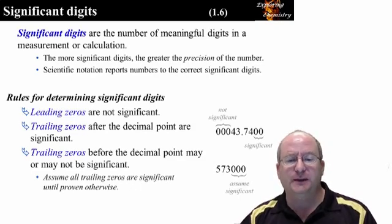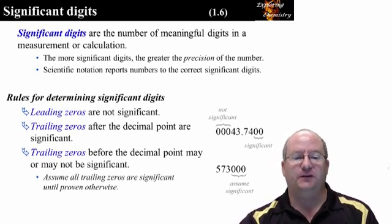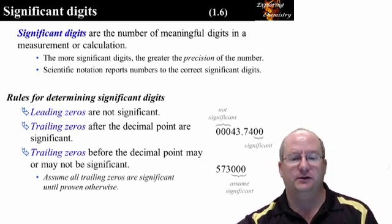The rules for determining the number of significant digits in a number are presented here. Leading zeros are not significant. Trailing zeros after the decimal point are significant.